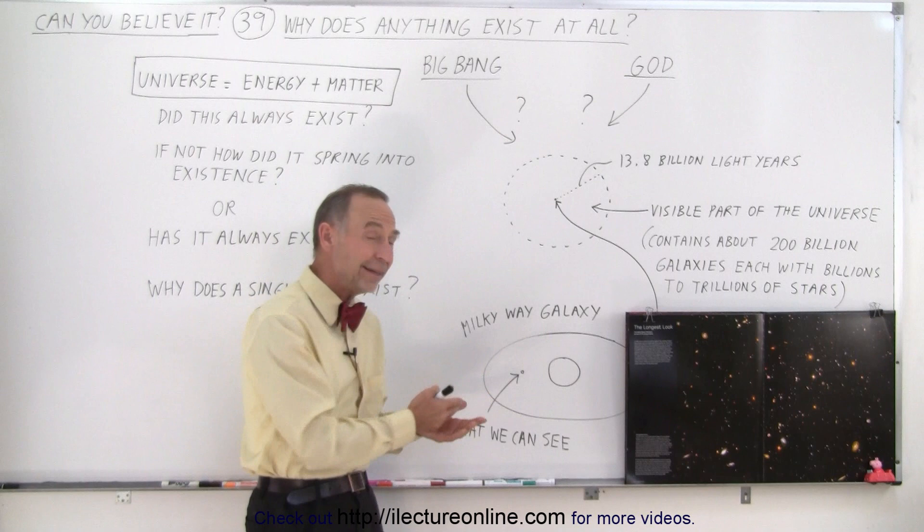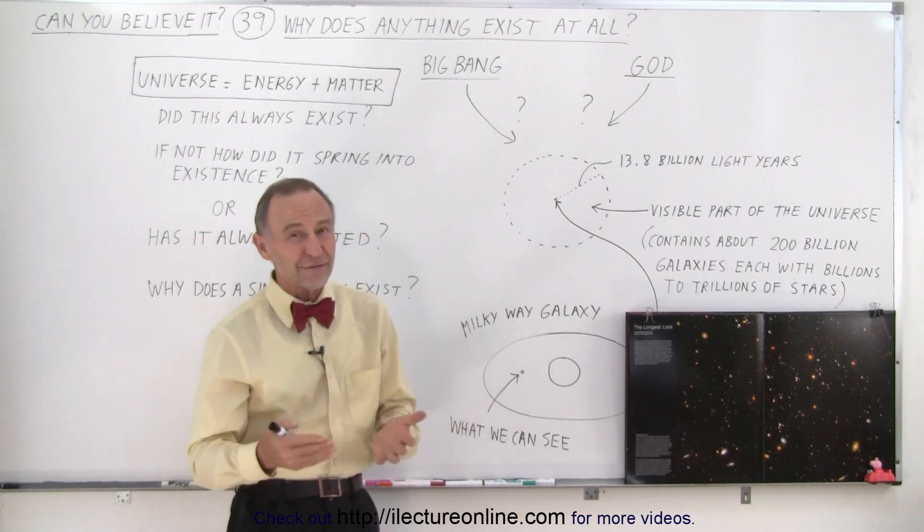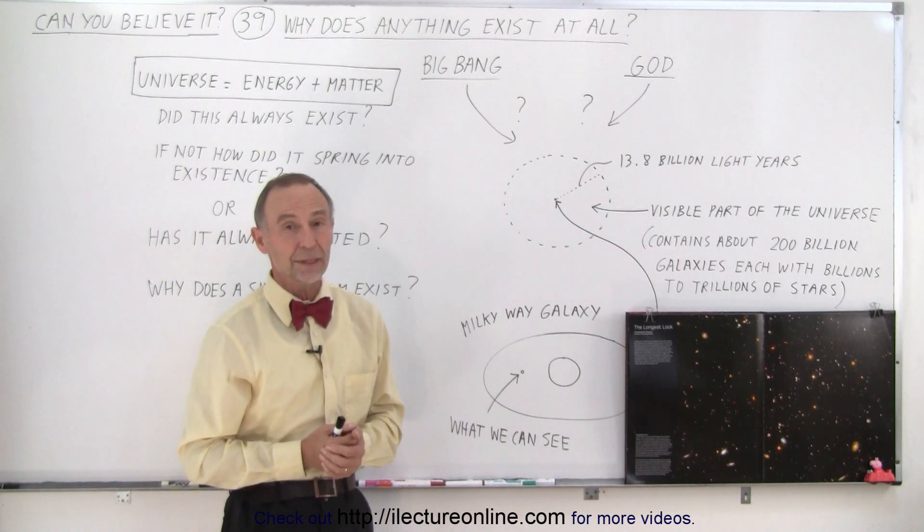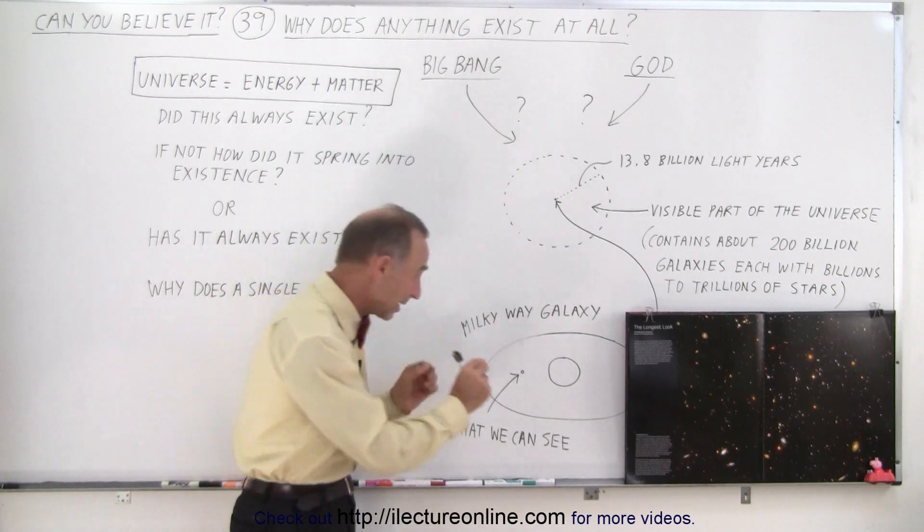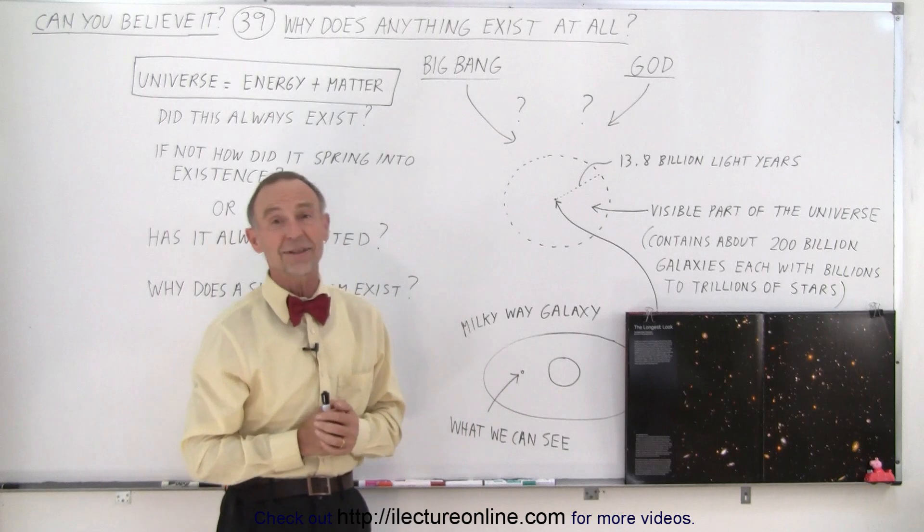Our galaxy has about 250 billion stars in it. And with the naked eye, we can only see about 6,000 of them. And they're all right here in our own little neighborhood of the galaxy.